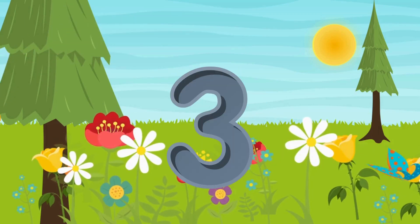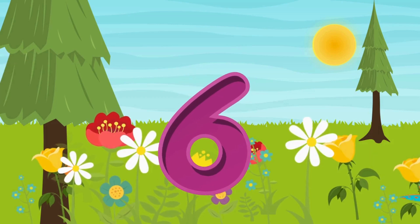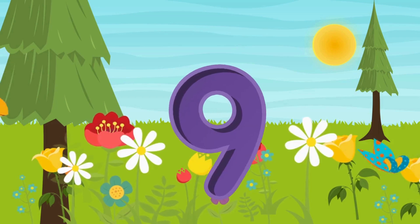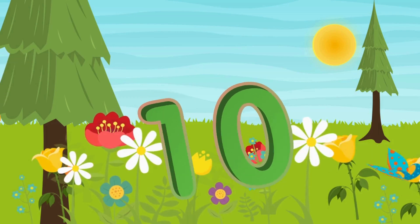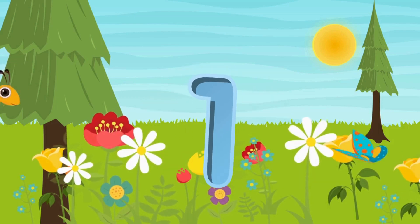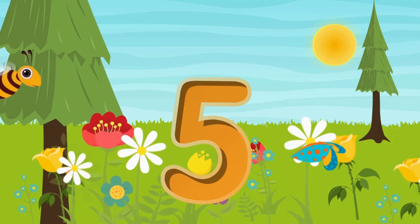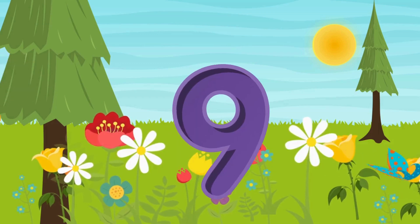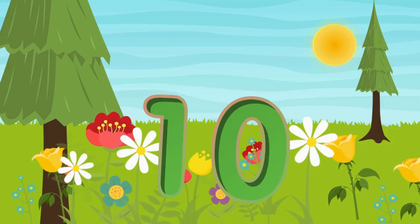One little, two little, three little numbers. Four little, five little, six little numbers. Seven little, eight little, nine little numbers. Ten little numbers. One little, two little, three little numbers. Four little, five little, six little numbers. Seven, eight, nine little numbers. Ten little numbers.